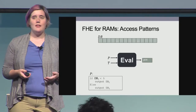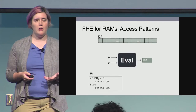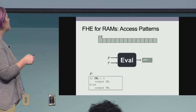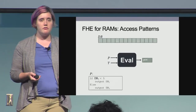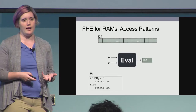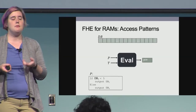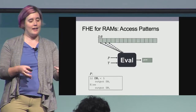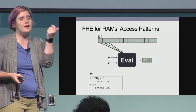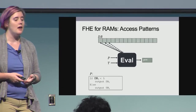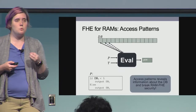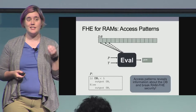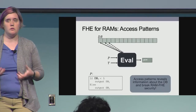To motivate why hiding access patterns is difficult, consider the following case. If we have a program that reads the first element of the database and, if it is less than five, does some access, and otherwise reads the third element and does a different access — inherently built into this program is some information about the first element of the database. The evaluator, even without the decrypted output, can tell information about the first element based on access patterns alone. This will break our RAM FHE security goal, so hiding access patterns is imperative.